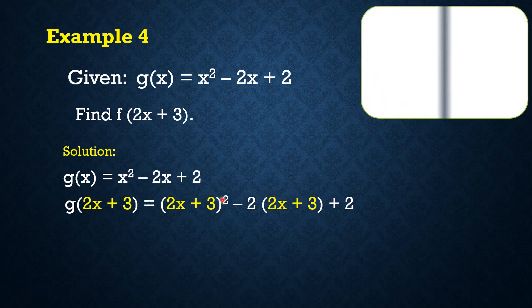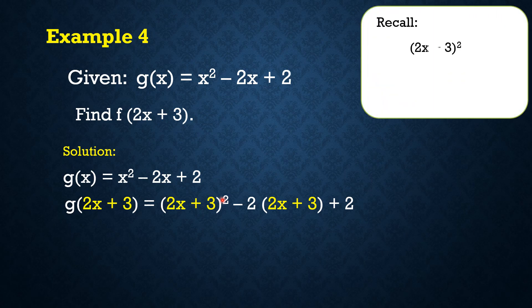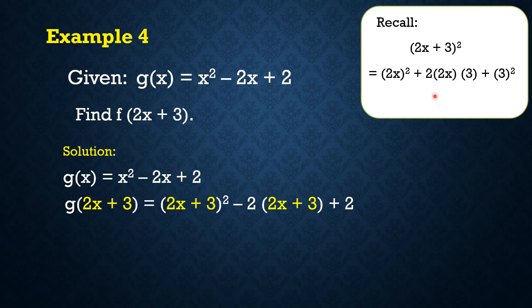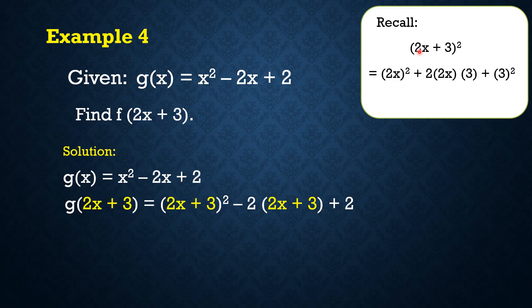So in squaring a binomial, let's recall the basic idea behind it. Ang ginagamit natin identity is that we need to get the square of the first term, and then twice the product of the first and the second term, and then the square of the last term. So it goes like this. So we have (2x)², square of the first term, and then twice, kaya may 2, the product of the first and the second term, kaya meron tayong 2 times 2x times 3, and then the square of the last term, which is 3².